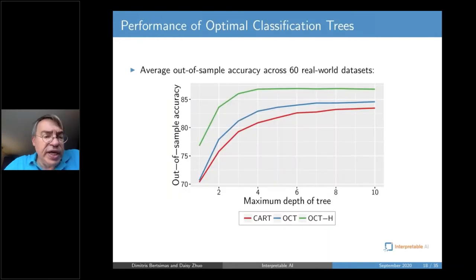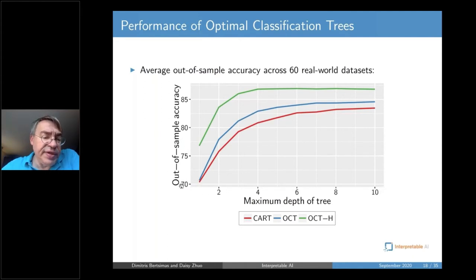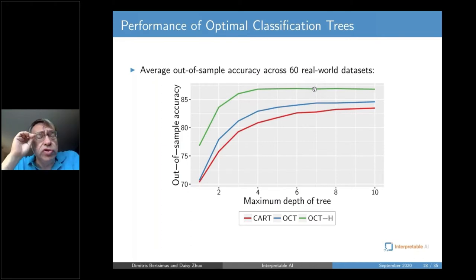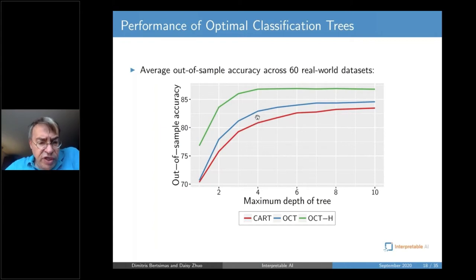A key question is what the performance is. Regular optimal classification trees have exactly the same interpretability as CART — and according to Leo Breiman, CART receives an A-plus in interpretability. Looking at out-of-sample accuracy on 60 real-world datasets ranging from small to sizable, the delta in performance between optimal classification trees and CART — keeping interpretability exactly the same — is on the order of 1% to 2% depending on depth, and maybe even more for lower depths.